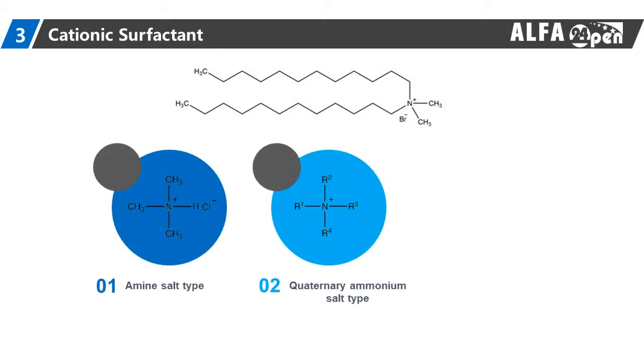Cationic surfactant is a positively charged surfactant, which refers to the hydrophilic base connected with the lipophilic base after its molecule dissolves in water. According to the chemical structure of cationic surfactants, it can be divided into amine salt type, quaternary ammonium salt type, and heterocyclic type.